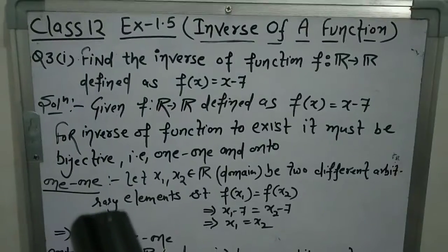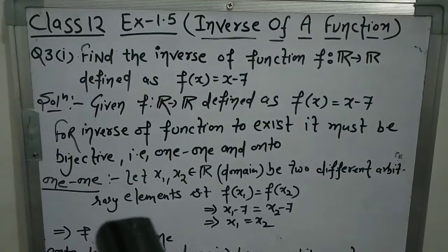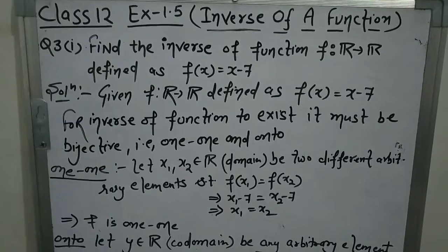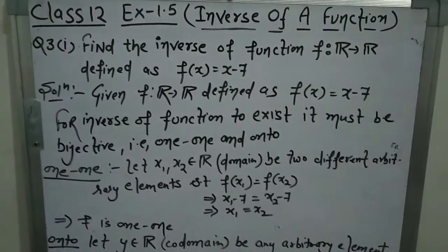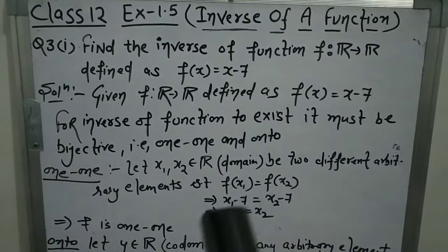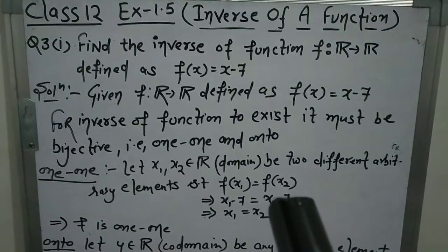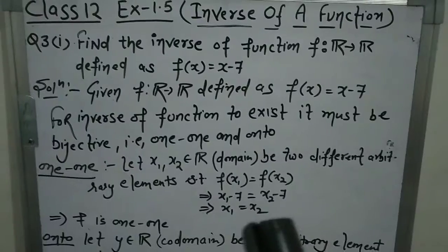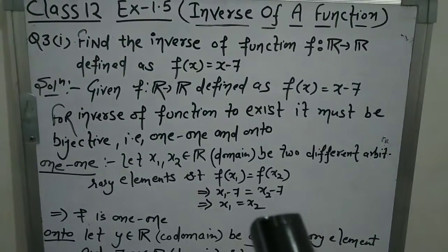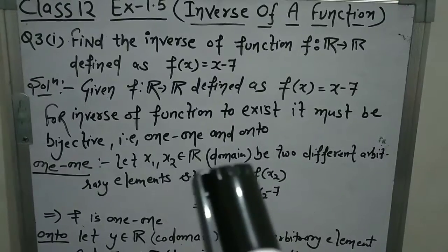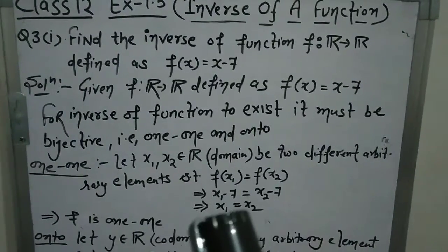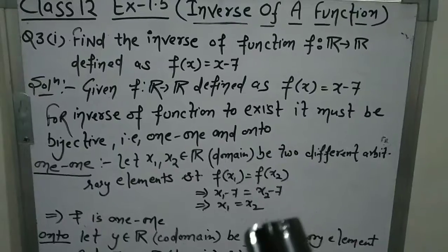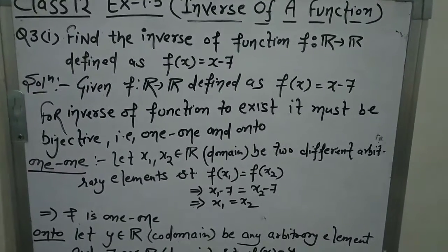Now we will first prove one-one. To prove one-one, we need to show that no two different elements have the same image. Let x₁ and x₂ be two different elements such that f(x₁) = f(x₂). According to the function, x₁ - 7 = x₂ - 7, which implies x₁ = x₂. So if images of different elements are the same, the elements themselves turn out to be the same — which means it is not possible for different elements to have the same image. So the function is one-one.